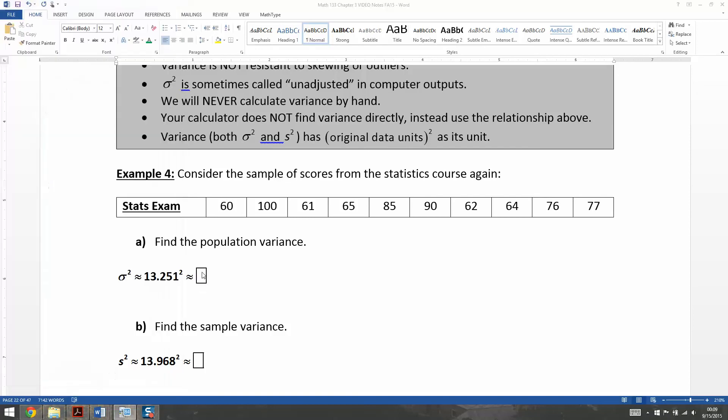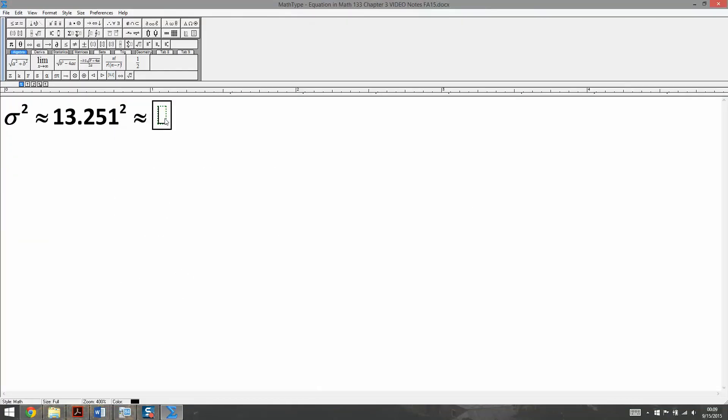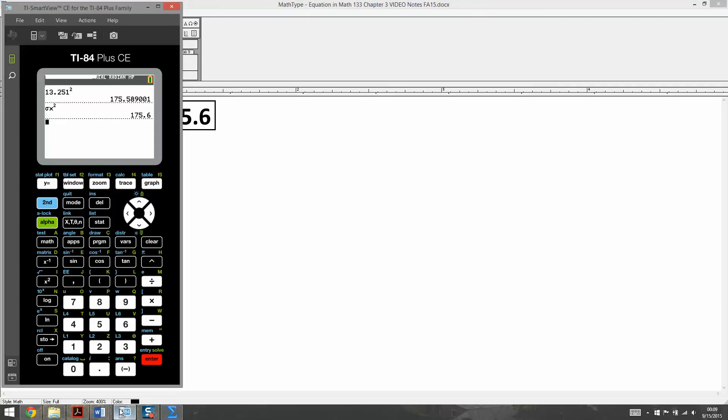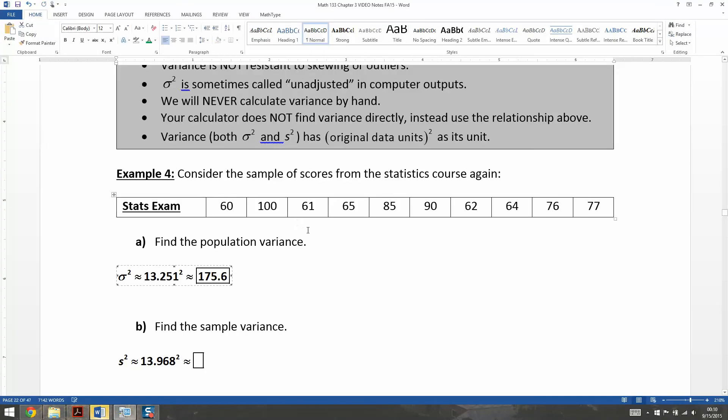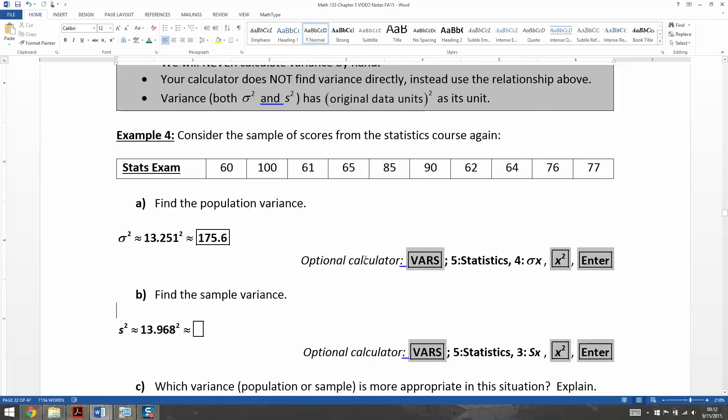So it doesn't matter much to me, but I'm going to type this in. So 175.6. At least I think that's what it was. Yep, 175.6, roughly. And I'm going to go write up those instructions. There we go. So I wrote up the optional calculator instructions. Again, you don't have to do them that way. You can just type 13.968 squared, but it's not nearly as much fun.